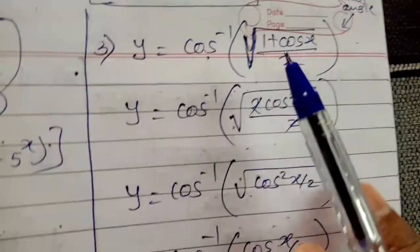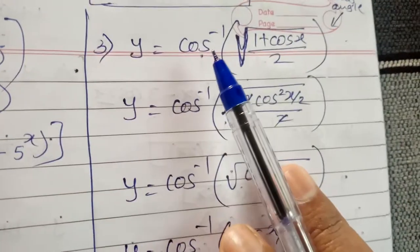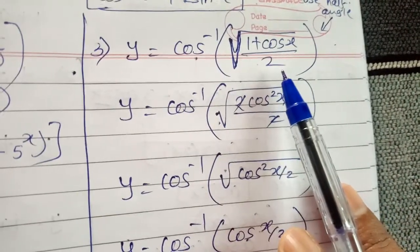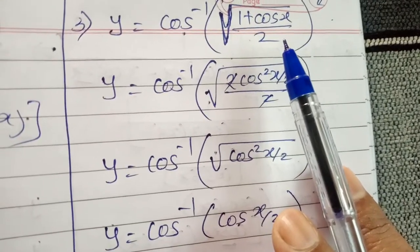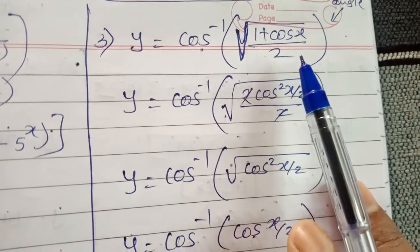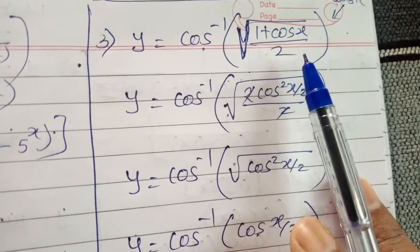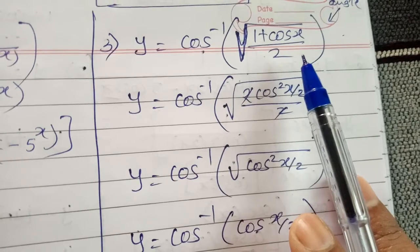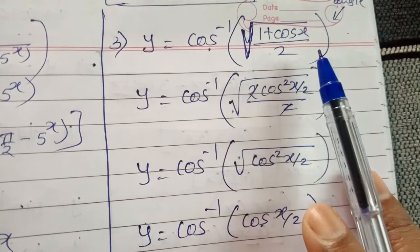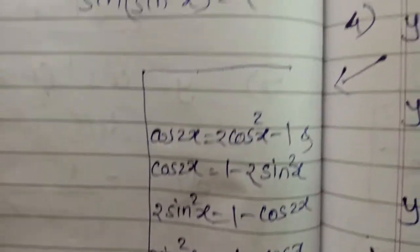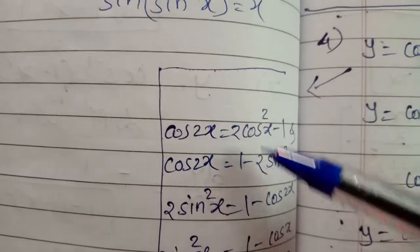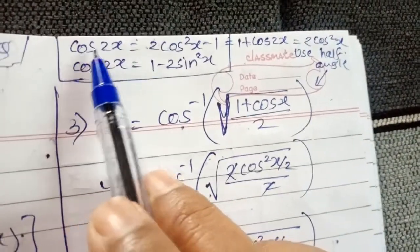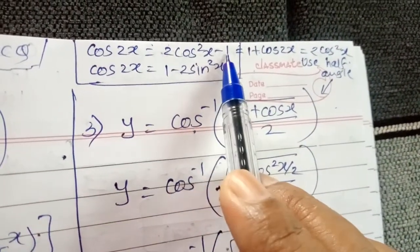Example number 3: y equals cos inverse of square root of (1 + cos x) upon 2. We recall the cos double angle formulas from standard 11: cos 2x = cos²x - sin²x, cos 2x = 2cos²x - 1, and cos 2x = 1 - 2sin²x. What we need here is 1 + cos x. From cos 2x = 2cos²x - 1 we get 1 + cos 2x = 2cos²x.